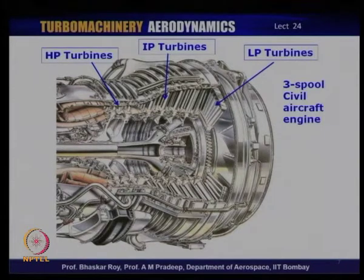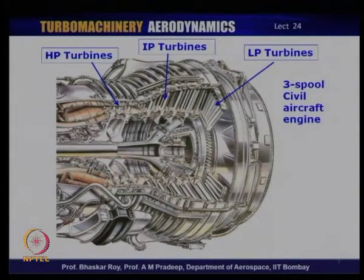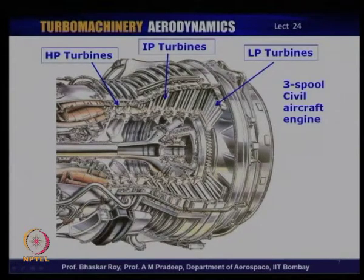There is also a very large aero engine shown — a three-spool civil aircraft engine with a large number of turbines. After the combustion chamber where fuel is burned, gas supplies the HP turbine, which produces a large pressure drop, then passes into what is called the intermediate pressure or IP turbines — about three stages — and finally goes through the low-pressure or LP turbines. This engine has three shafts: first shaft, second shaft, and third shaft.